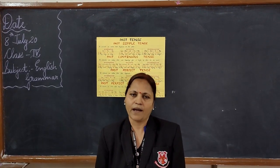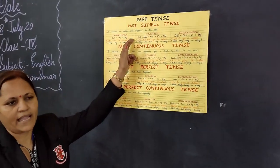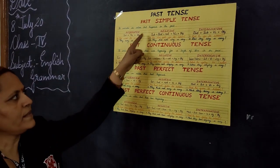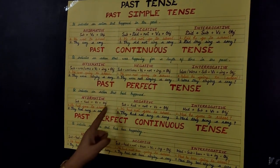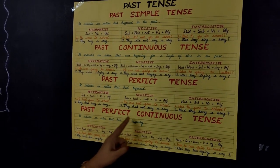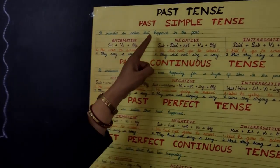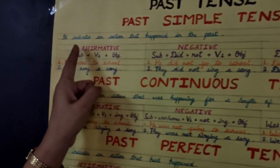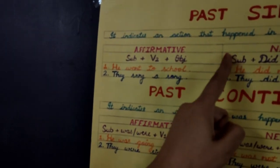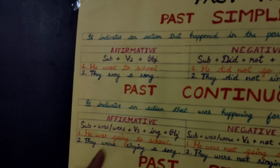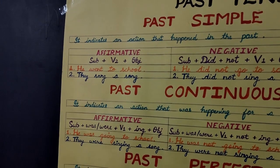Today's topic is past tense. Here you can see the classification of past tense: past simple, past continuous, past perfect, and past perfect continuous tense. First I will tell you what is past simple tense. It indicates an action that happened in the past — that means the work has been completed. That is called past simple tense.